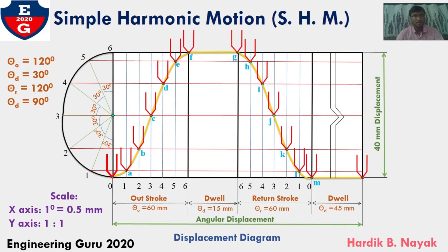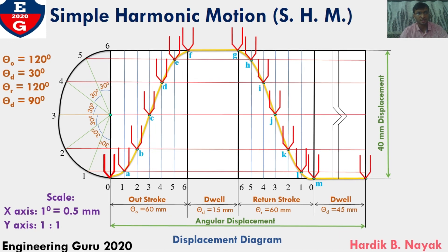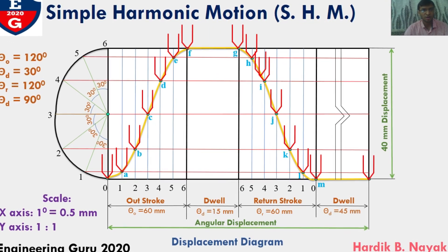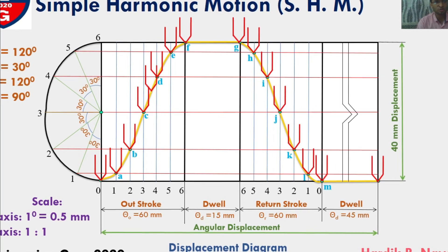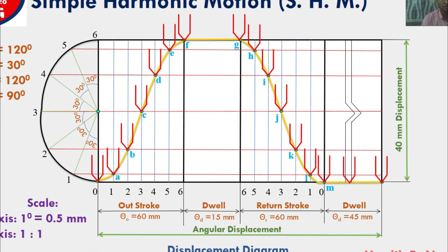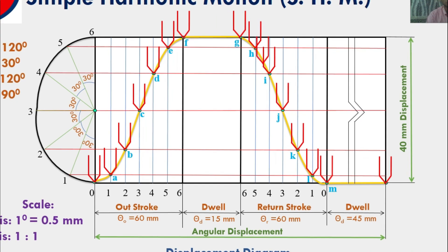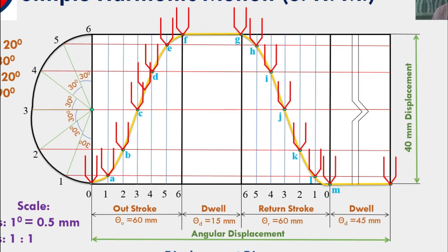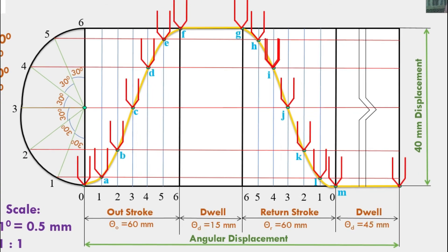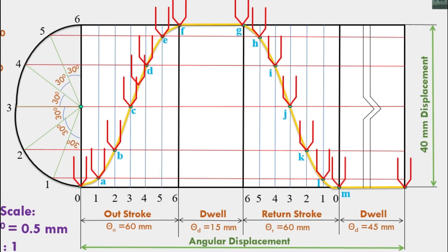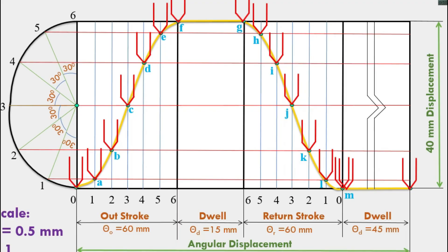This is the procedure you need to follow when simple harmonic motion is given. For example, I had assumed simple harmonic motion for outstroke and return stroke. It may be that simple harmonic motion will be there only in outstroke or in return stroke. That is also possible.